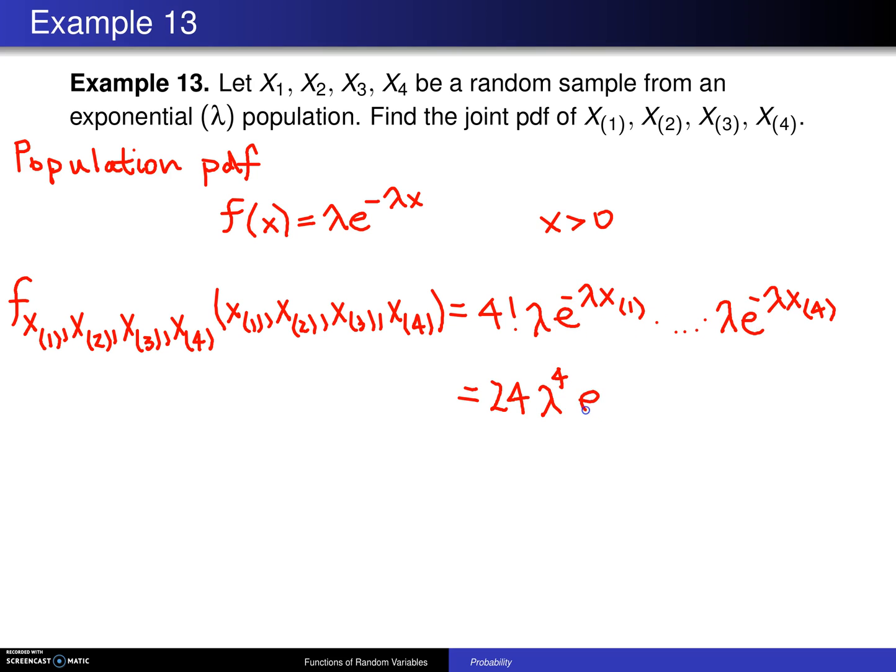And then like base add exponents means we can write this as e to the minus lambda times x1 plus x2, plus x3, plus x4, and that joint probability density function is defined on the support 0 is less than x1, is less than x2, is less than x3, is less than x4.